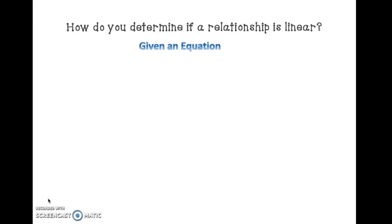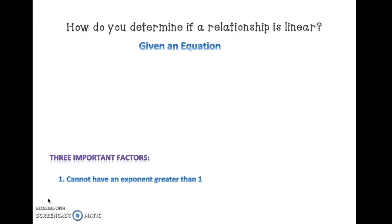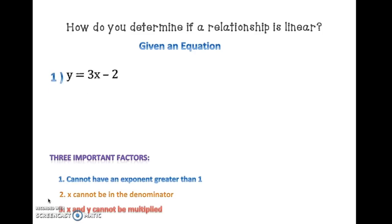Now let's take a look at how to determine if a relationship is linear given an equation. Remember there are three important factors: the variable cannot have an exponent greater than 1, x cannot be in the denominator, and x and y cannot be multiplied. Number 1: y is equal to 3x minus 2. The exponent is 1, x is not in the denominator, and x and y are not multiplied. So this equation is linear.